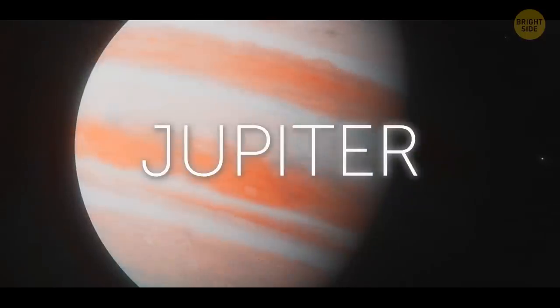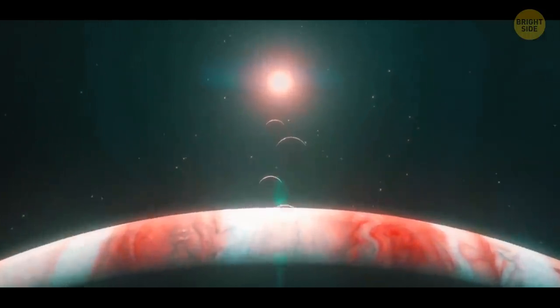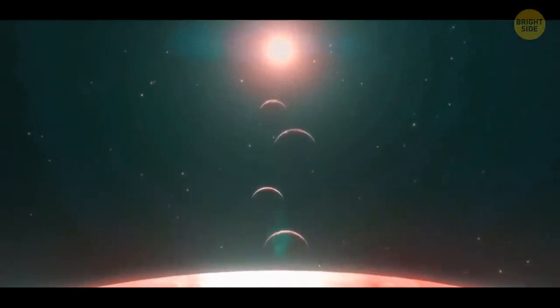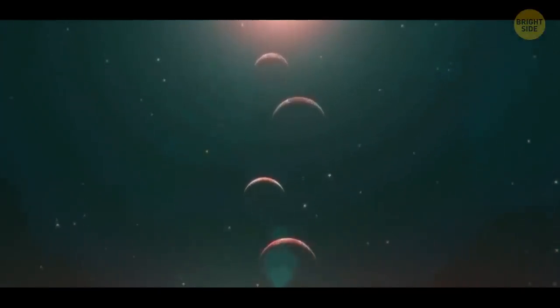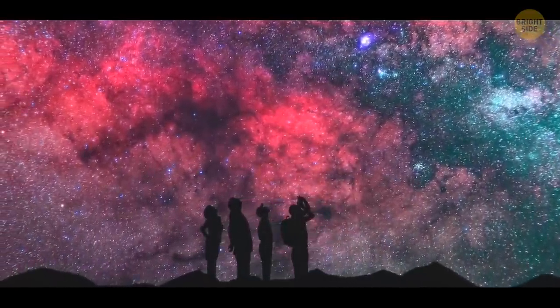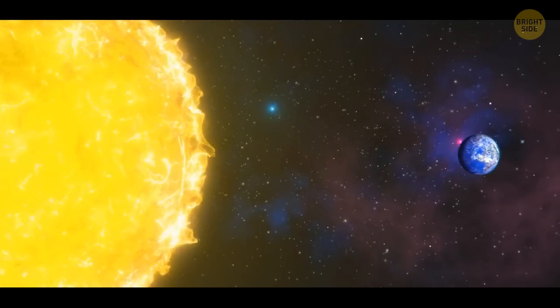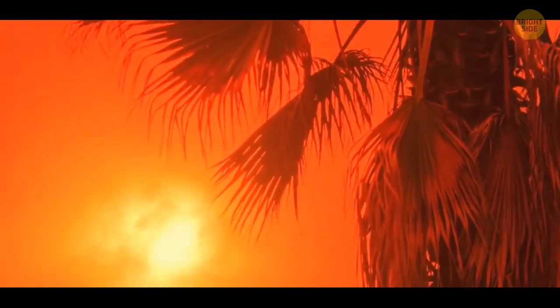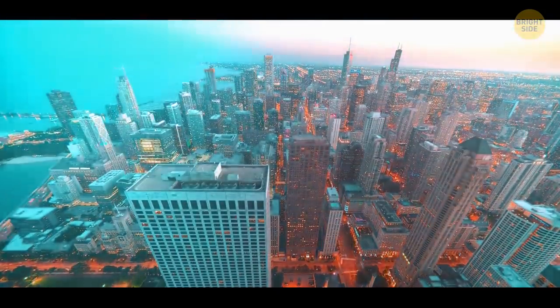Jupiter's heavier than all the planets in our solar system combined. It holds back the asteroid belt, and its gravity's actually strong enough to affect the Earth. A couple of thousand years after it disappears, we'd notice big changes. We'd move closer to the Sun, which means a couple of things. One, we'd have much hotter weather all year round. And two, our days, weeks, and years would be shorter.